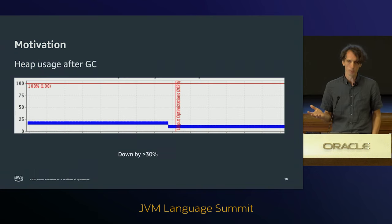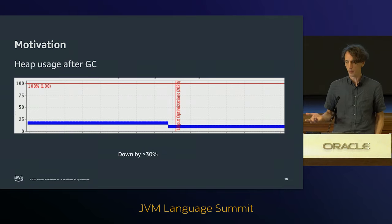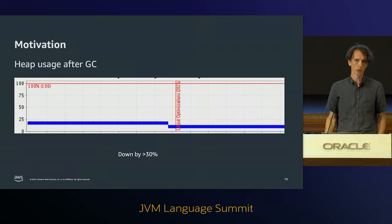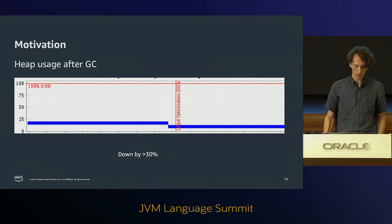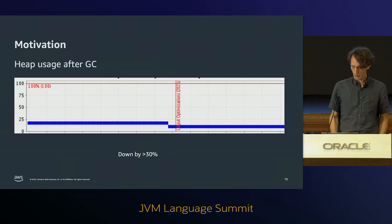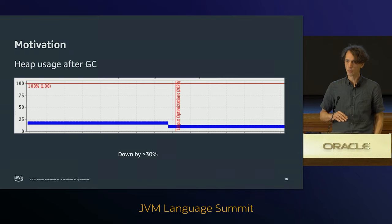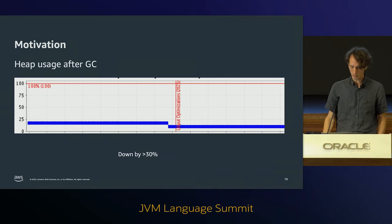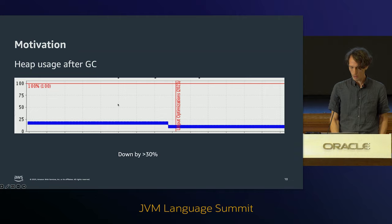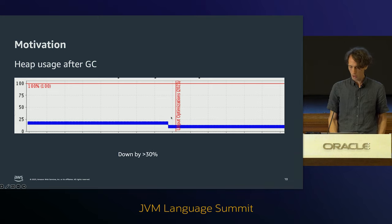For a more concrete example, we backported Lilliput 1 to JDK 17 and gave it to some of our services. I can't tell you which ones or give exact numbers, but we can talk percentages. The little red bar is where they deployed Lilliput - exact same workload, exact same instance size, exact same JVM with a switch to toggle it. At the point where we turned Lilliput on, we are saving about 30% of heap memory.